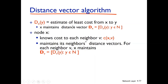Dxy is the estimated least cost from source node x to y. At the same time, node x knows who its directly connected neighbors are and the direct link costs cxv to each neighbor v.